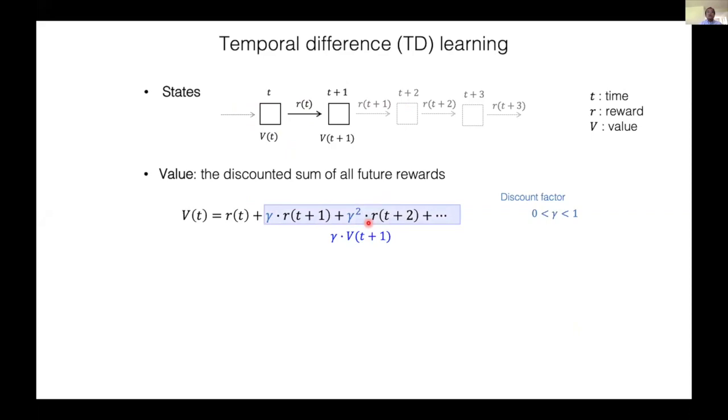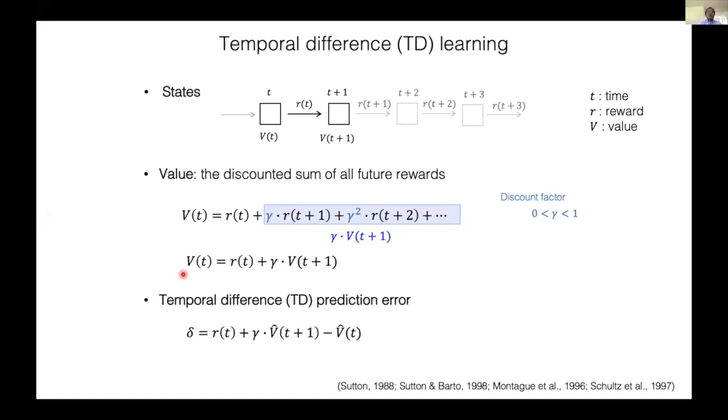And this equation should hold true if the prediction is accurate. But if the current prediction is still being learned, this might not hold true. The difference between the right hand side and left hand side may represent the inconsistency or error in the predictions. So a prediction error can be defined as the difference between the left hand side and right hand side, and this is indeed how the temporal difference error is defined. This is called temporal difference error because it uses the difference of values between consecutive time points between t plus 1 and t.